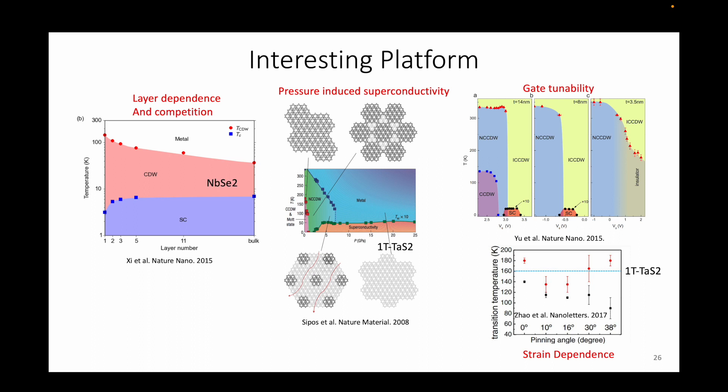In several materials, the charge density wave transition, as well as the superconducting transition, show strong layer dependence. In niobium diselenide, for example, the dependence to the number of layers seem to be opposite to each other. At low number of layers, charge density wave transition temperature is enhanced while the superconducting transition is suppressed, showing signatures of competition between the two phases.